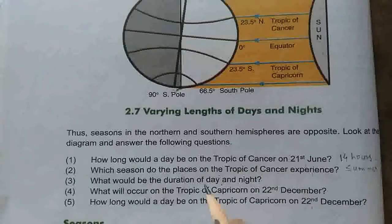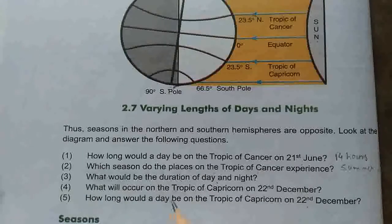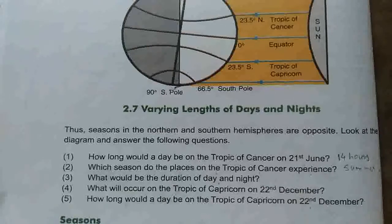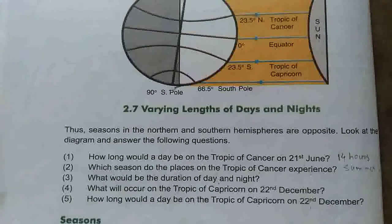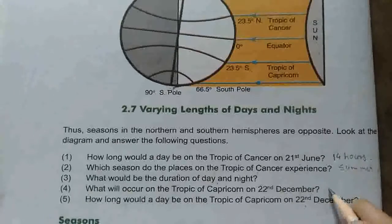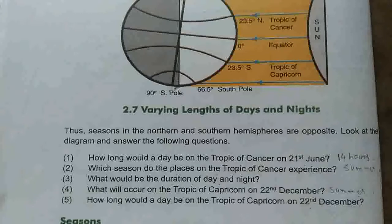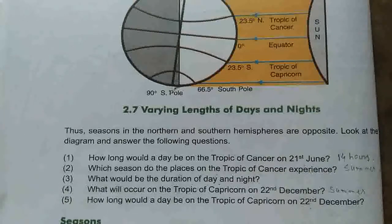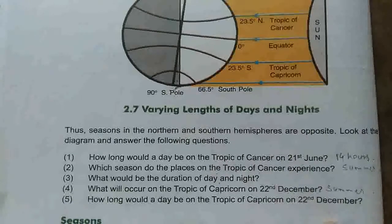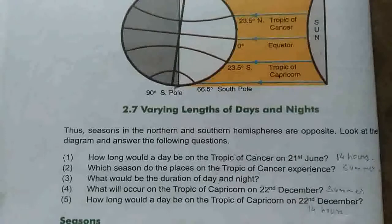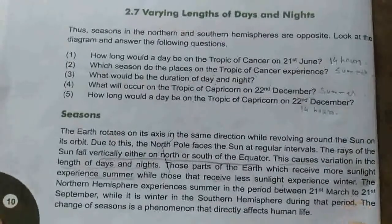When it is summer, days are longer and nights are shorter. What will occur on the Tropic of Capricorn on 22nd December? When the sun rays fall vertically on the Tropic of Capricorn, what is experienced? Summer is not felt here in India — that is felt in other countries. In India we have winter season, but in countries through which the Tropic of Capricorn passes, summer is felt. How long would the day be on the Tropic of Capricorn on 22nd December? That should also be about 14 hours.